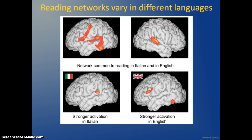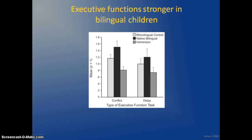When thinking about vocabulary and language, reading networks vary in different languages. For Italian — a phonetic language — versus English, which is only partially phonetic, different brain areas are used. Some areas are the same, some are different. This means being bilingual may benefit executive function capacities because you'll have more network connectivity between different areas of the brain.